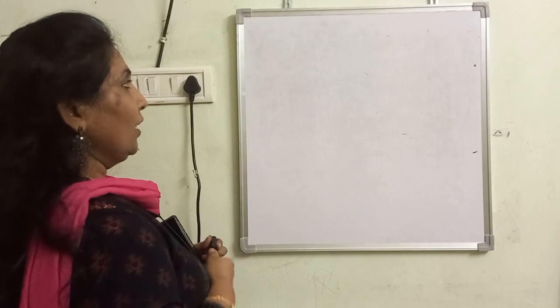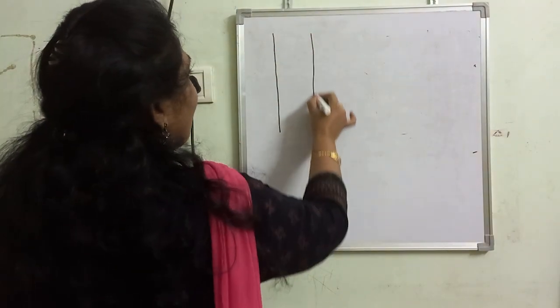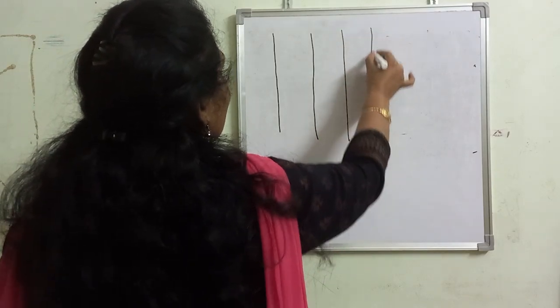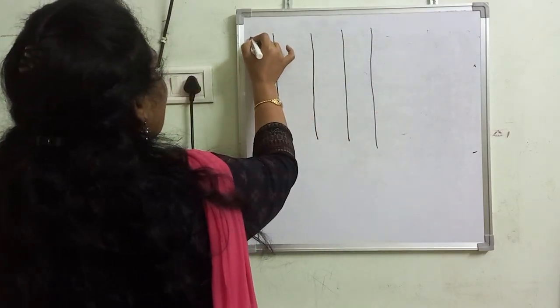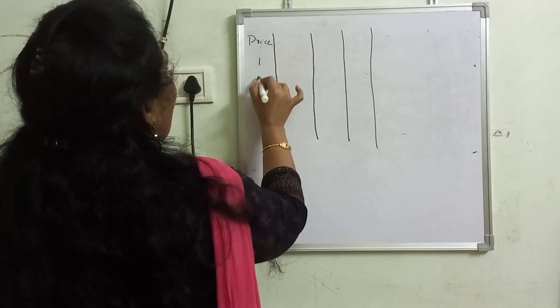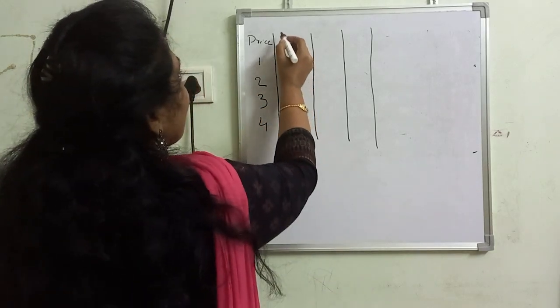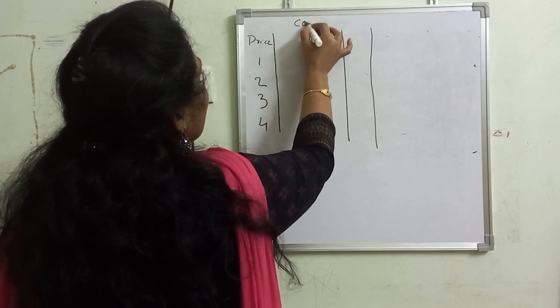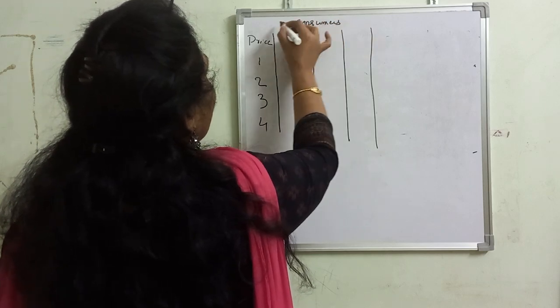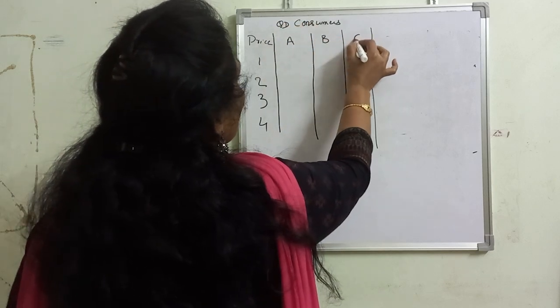Let us now analyze this phenomenon with the help of a table. Let me assume that there are three consumers in the market. This is the price in the market for commodity X — prices 1, 2, 3, 4 per unit. These are the consumers and their quantity demanded: consumer A, consumer B, consumer C.